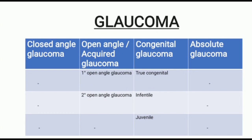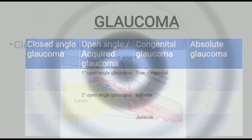We will now discuss the types of Glaucoma. Glaucoma has three to four types: close angle glaucoma, open angle or acquired glaucoma, congenital glaucoma, and absolute glaucoma. Open angle glaucoma has two subtypes: primary open angle glaucoma and secondary open angle glaucoma. Congenital glaucoma is also divided into three subtypes: true congenital glaucoma, infantile congenital glaucoma, and juvenile congenital glaucoma.